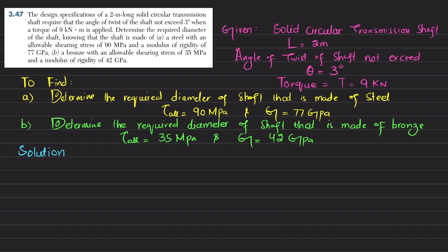We will find the diameter of the shaft. This is the frontal view of the shaft. The total length of this shaft is given as 2 meters, so length L = 2 m.